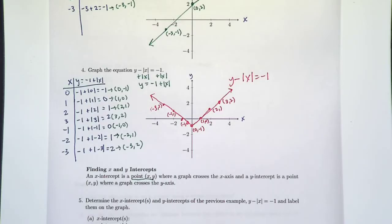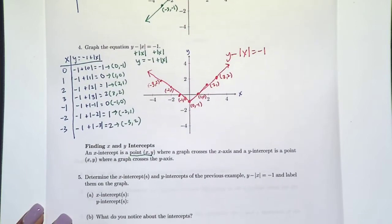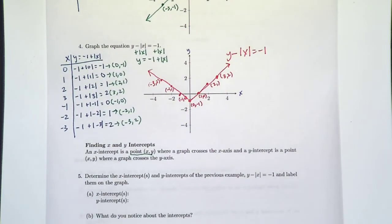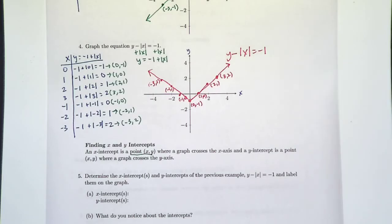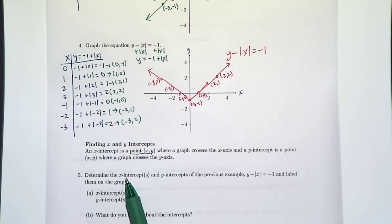So number five says we want to determine the x and y intercepts of the previous example, this equation right here that we've already graphed, and label those on the graph. Remember, an x-intercept is a point where our graph crosses the x-axis. So where does that happen? Where does our graph cross the x-axis?